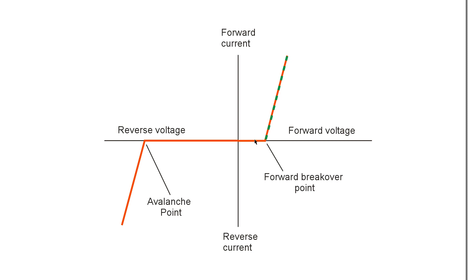When you forward bias a diode, it usually takes about six-tenths of a volt before the diode will begin to conduct. If you forward bias a silicon diode at anything less than six-tenths of a volt, it won't conduct.